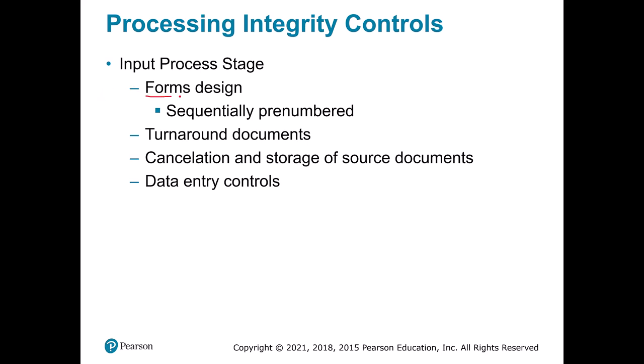One example is forms. Checks have a sequential number on them — the idea is you don't want anyone to duplicate a check, and if you have a unique ID for each one, it's easier to track and control them. A turnaround document is usually a bill sent to your house by a company like AT&T or Verizon. It has pre-printed information on your account — the date, how much you owe — and often a pre-addressed envelope. If you just send a random check, they don't know what account to apply it to. But by returning the invoice with your payment, they have all the information to key in the check and apply the balance to the proper account.